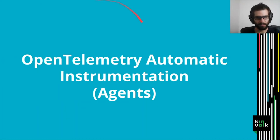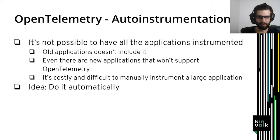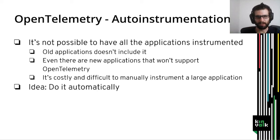Let me tell you about automatic instrumentation. It's not always possible to have all applications or libraries manually instrumented. Some old applications don't include support for OpenTelemetry and are no longer updated. Some new applications also don't support it because the developers decided not to. And perhaps the most powerful reason is that it is difficult and costly to add manual instrumentation to a large application — you have to go through all the code to create spans. So the idea of automatic instrumentation is to do this automatically.